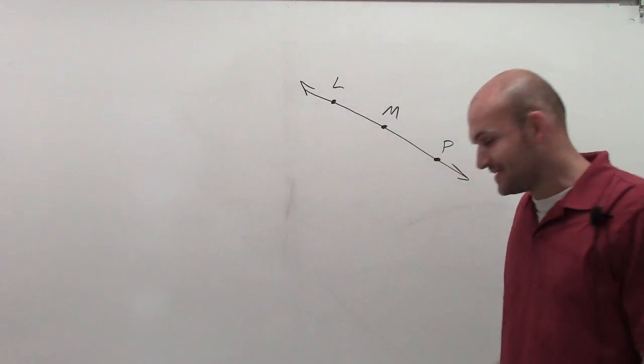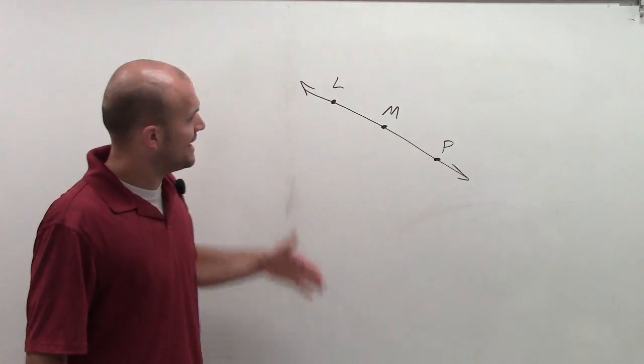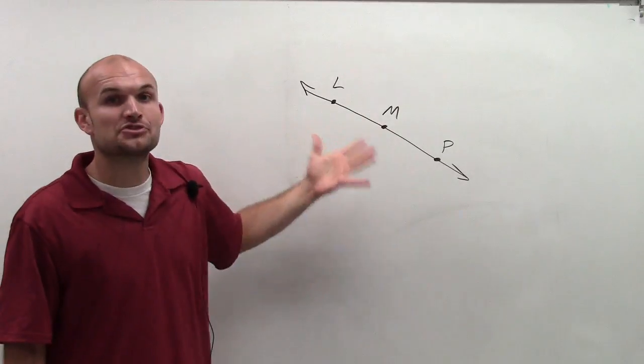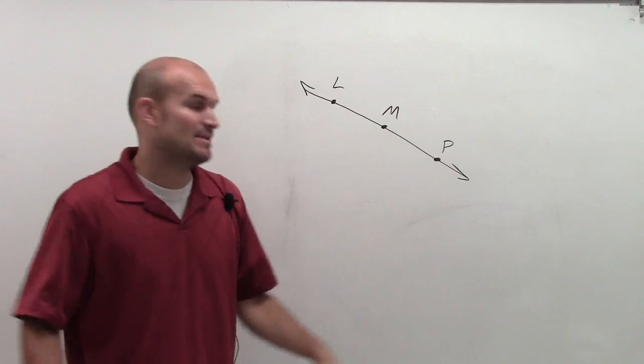So you want to name the rays in the figure. What we have is we have a line, and the line is containing these three points that I'm giving names to, L, M, and P, even though we know a line contains infinitely many points.